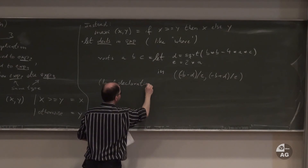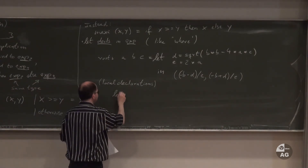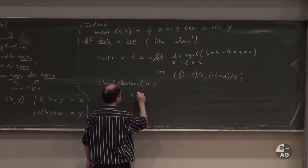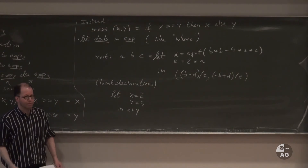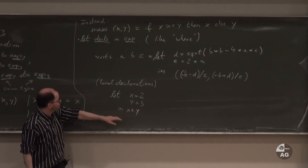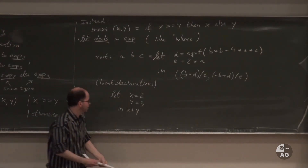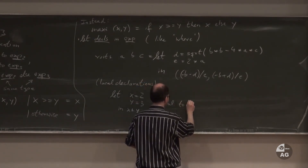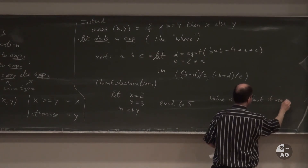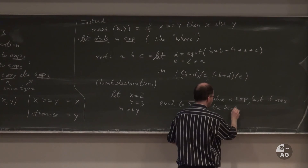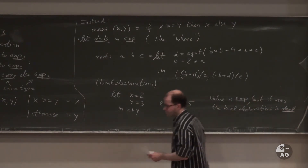The value of a let expression is the expression after 'in', using the local declarations. For example, 'let x = 2; y = 3 in x + y' evaluates to 5. Local declarations can include type declarations, function declarations, and infix declarations, but not new type definitions.